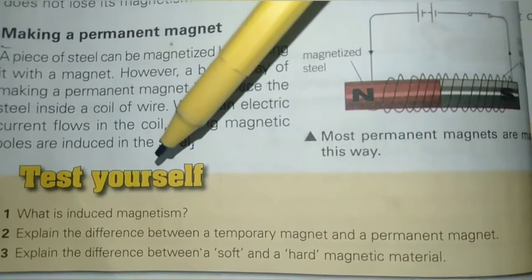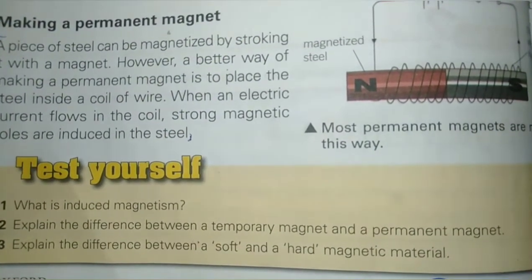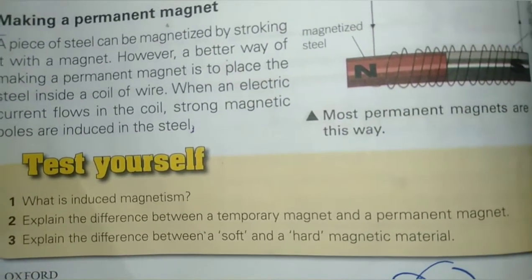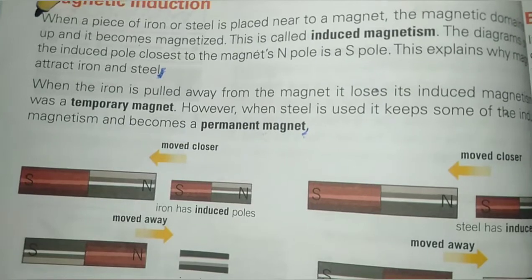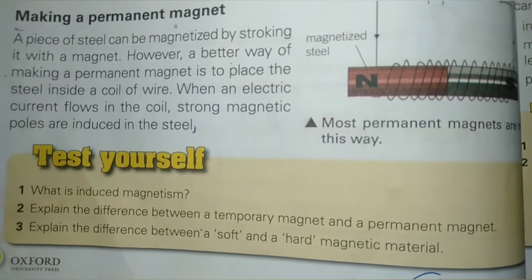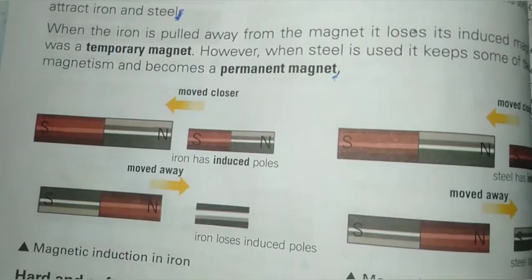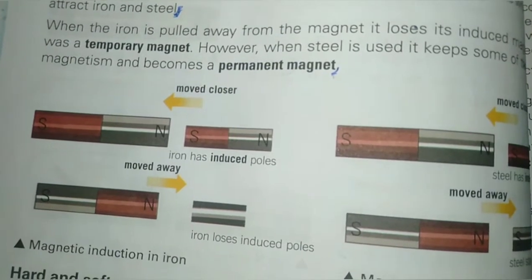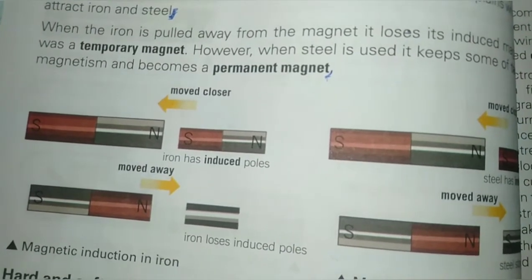Test yourself — Question 1: What is induced magnetism? When a piece of iron or steel is placed near a magnet, the magnetic domains line up and it becomes magnetized; this is called induced magnetism. Question 2: Explain the difference between a temporary magnet and a permanent magnet. A temporary magnet loses its induced magnetism when it is pulled away from a magnet. A permanent magnet does not lose its magnetism even when pulled away.